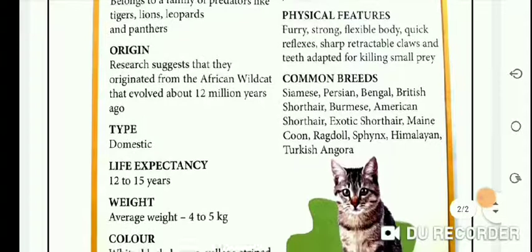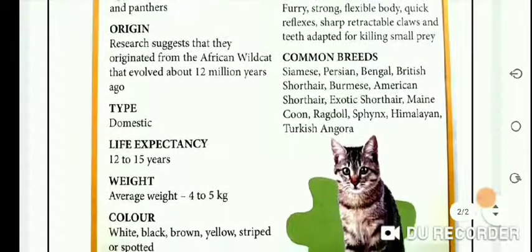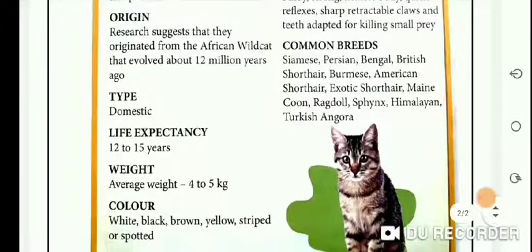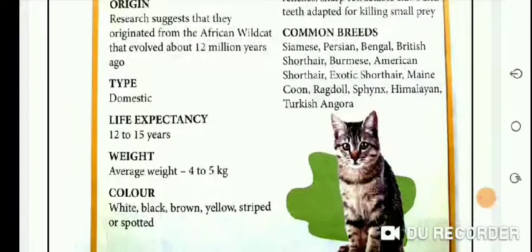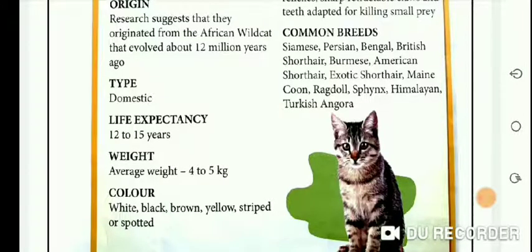Type: domestic. Life expectancy: 12 to 15 years. Weight: average weight 4 to 5 kgs. Color: white, black, brown, yellow, striped or spotted. In all these categories, simply the heading is written in one or two words, and the information is also given in the least number of words — like three or four words, or maybe very short sentences.